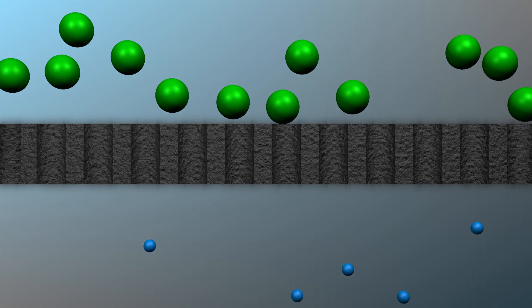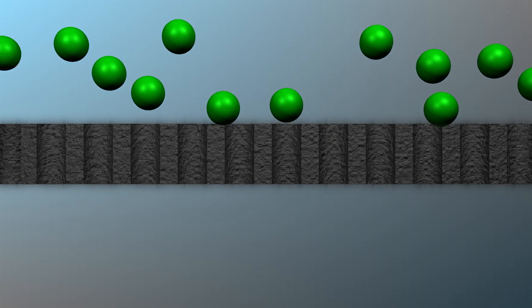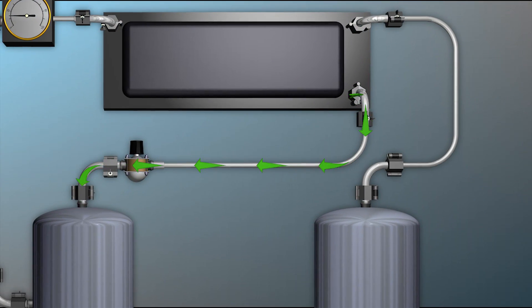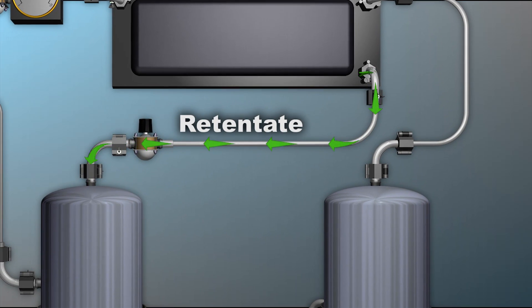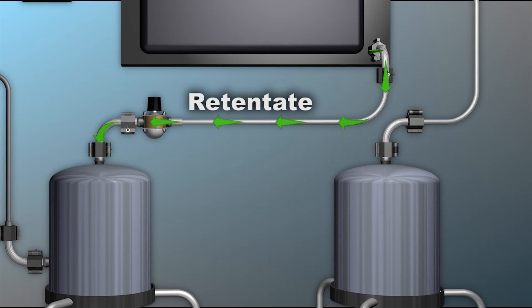The GFP protein is larger than the pores of the membrane and is retained. The retained material, called retentate, is recirculated to the supply tank.